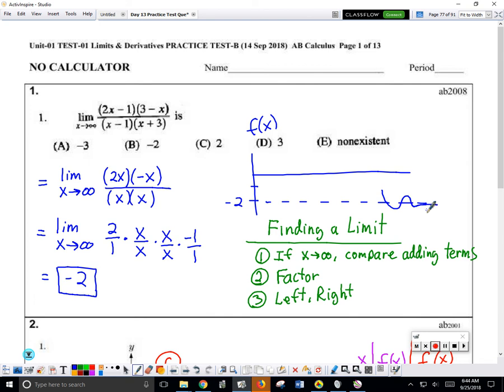Which means this function has a horizontal asymptote at y equals negative 2. It's critical that you always connect the finding of a limit as x approaches infinity to the fact that once you've found that limit, you've also found the horizontal asymptote of the function. Okay.